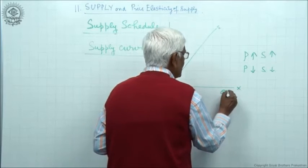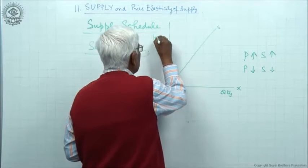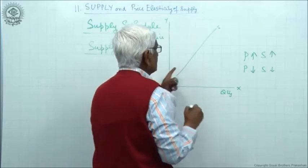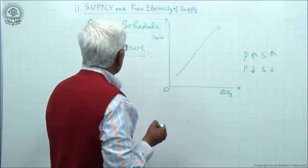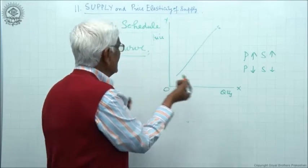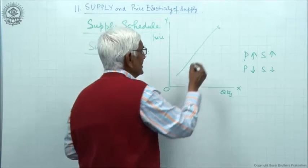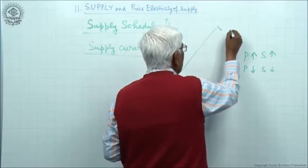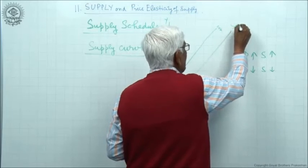Of course, we show quantity on this axis and price on this axis. Now suppose there are, once again we assume that there are only two producers. Let us say this is A, then there is another producer B.